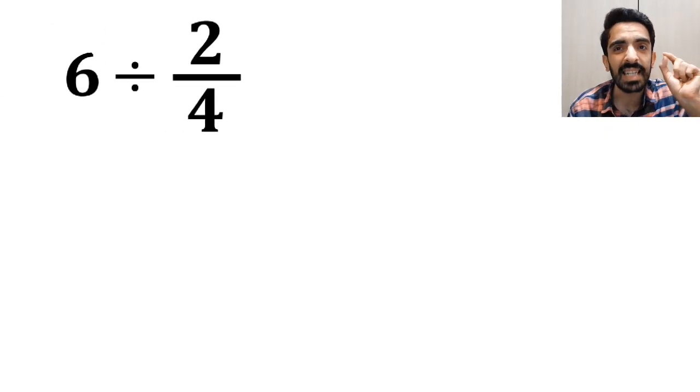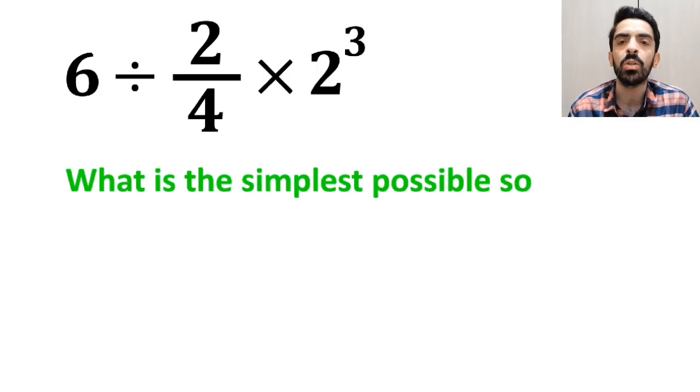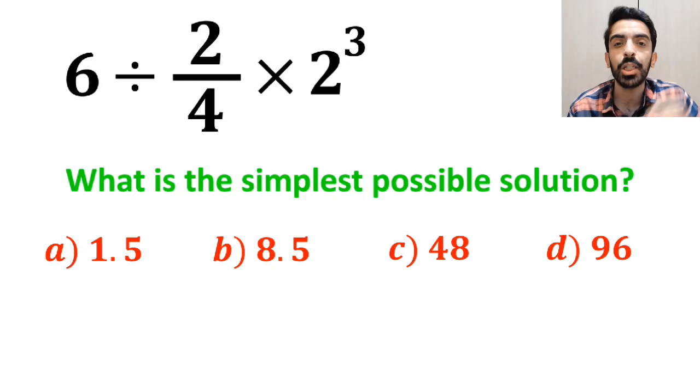If we have the expression 6 divided by 2 over 4 times 2 to the power of 3, then what is the simplest possible solution for this expression? Which option do you think is the correct answer to this question?